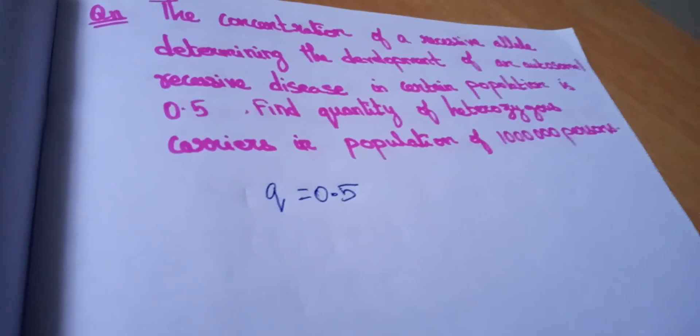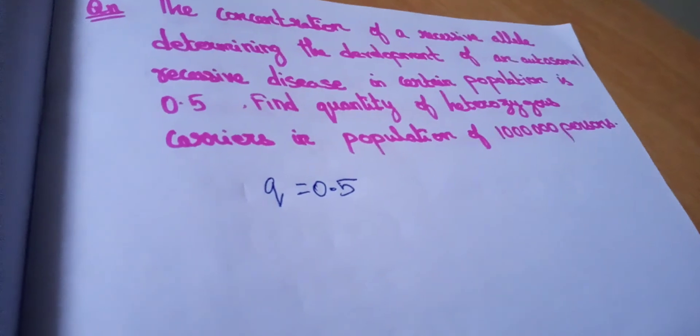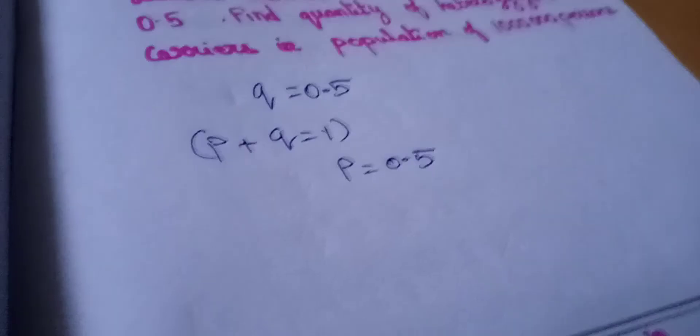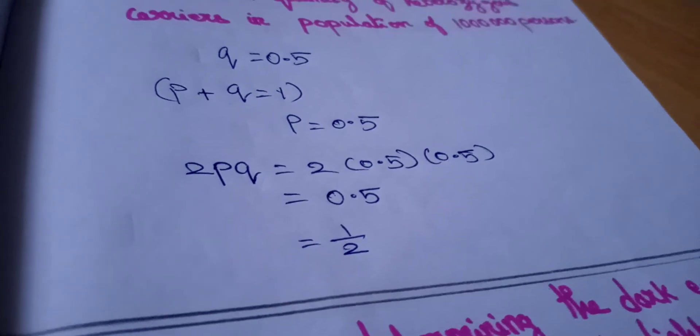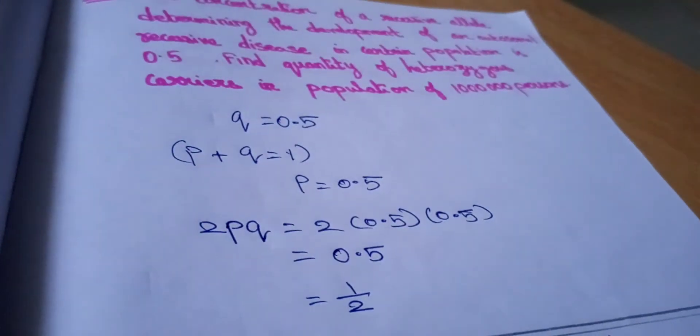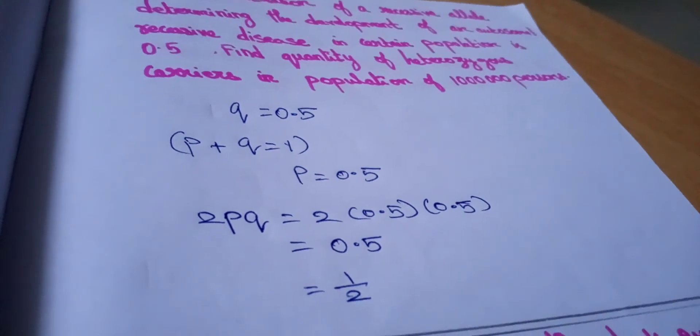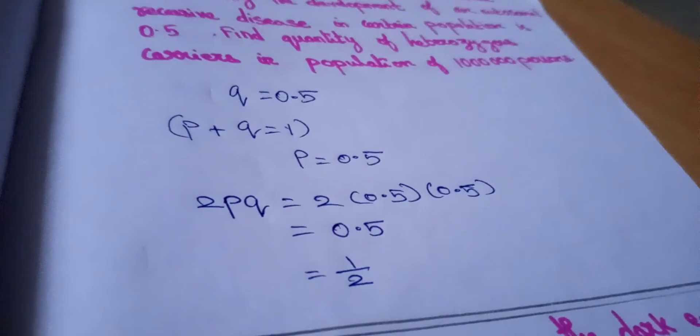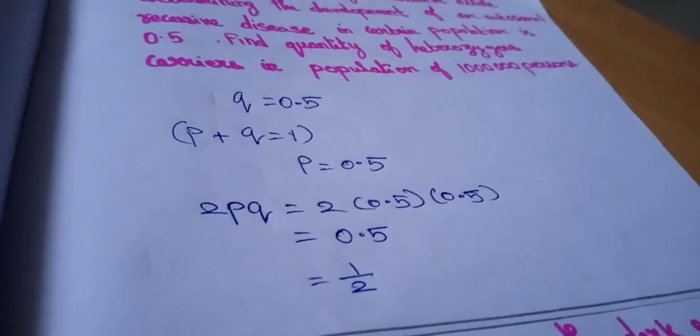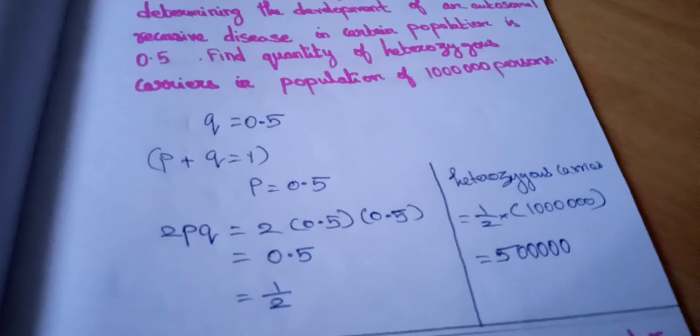If Q is 0.5, P is also 0.5. P + Q = 1. We will find 2PQ. We got 0.5, which is 1/2. And the total population is 1 million. They are asking the heterozygous carriers, so half a million is heterozygous carriers, which is 5 lakhs.